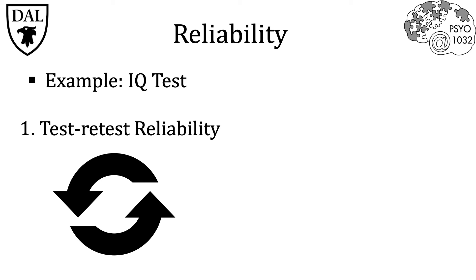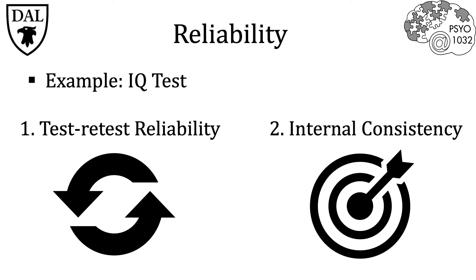Another important concept is internal consistency, which is also very high on IQ tests. This measures how well the questions on the test are assessing the same dimension, aligned with one another. For example, does a person get the same relative result on question 1 and question 2 if both questions are aiming to measure working memory? On the IQ test, the answer is yes.